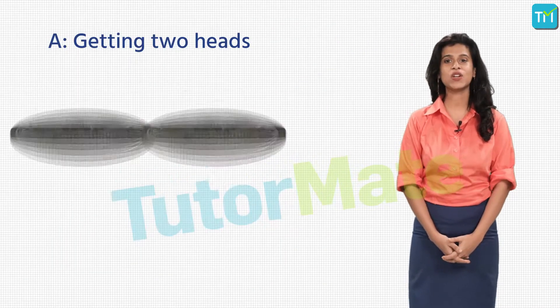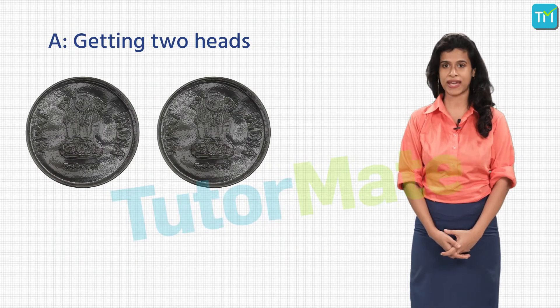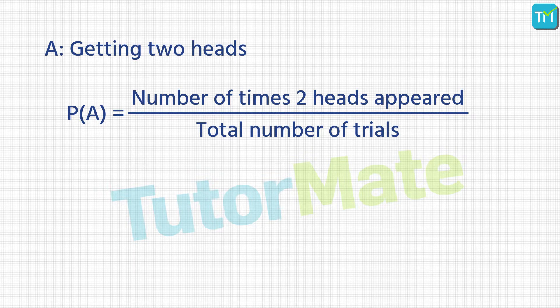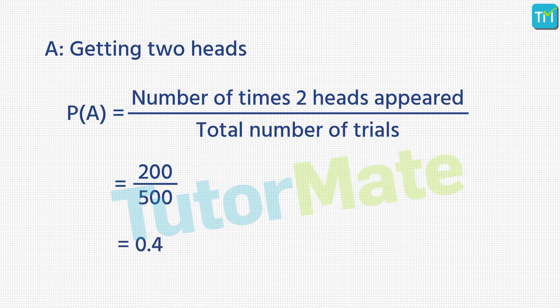Let A denote the event of getting 2 heads. The probability of A is the number of times the result was 2 heads upon the total number of trials. The result was 2 heads 200 times and the total number of trials is 500. So the probability of getting 2 heads is 200 upon 500, which gives us 0.4.